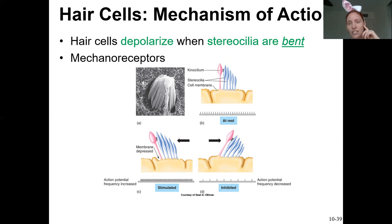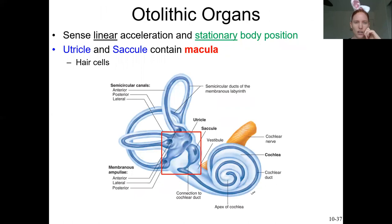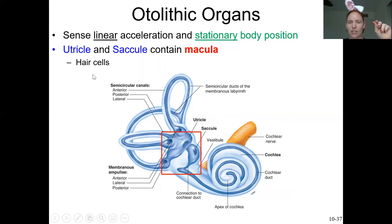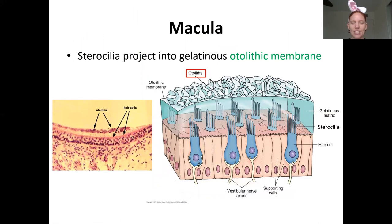Now let's look at the otolithic organs, also known as the vestibule. Remember: the utricle is on top, closest to the semicircular canals, and the saccule is on the bottom, closer to the cochlea. Both of them contain an organ that has those hair cells in it, called the macula. So the macula is found inside both the utricle and the saccule.